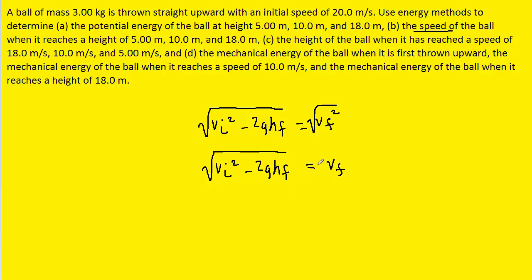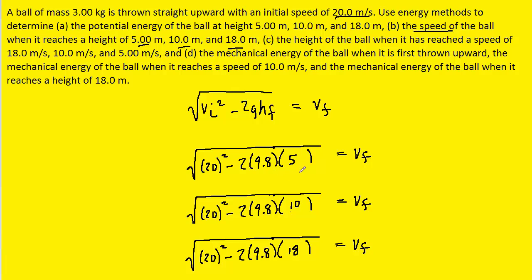Now that we have isolated Vf, we can plug in the initial velocity, which was given as 20 meters per second. g is 9.8, and the final heights are given in the question to be 5, 10, and 18. So once again, we're going to have three calculations that we will set up right now.